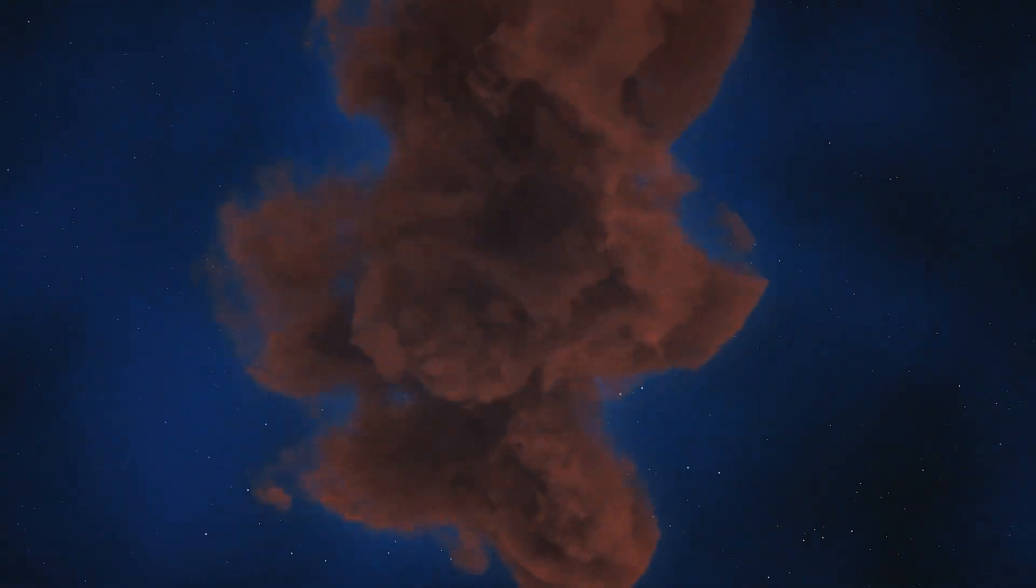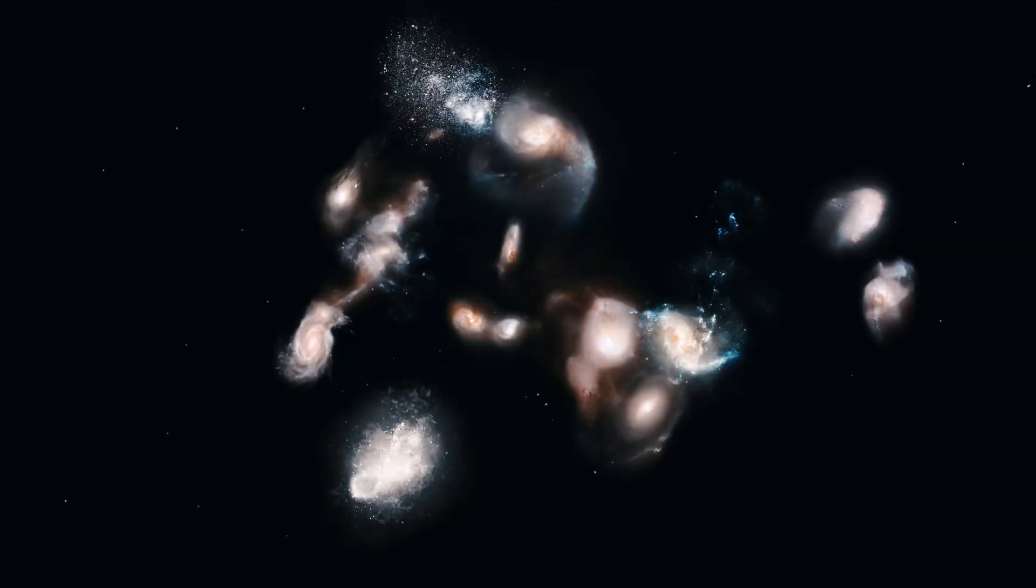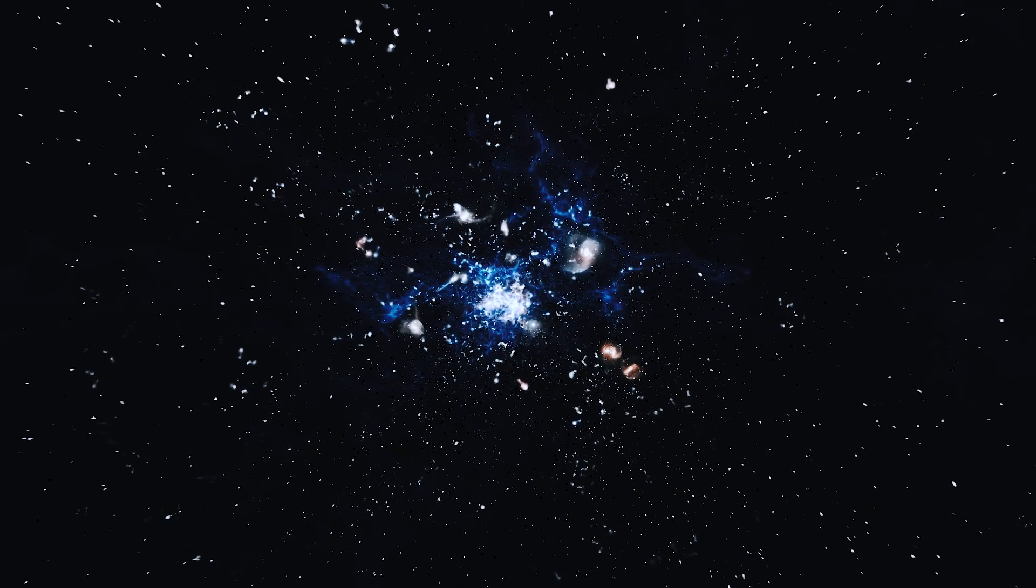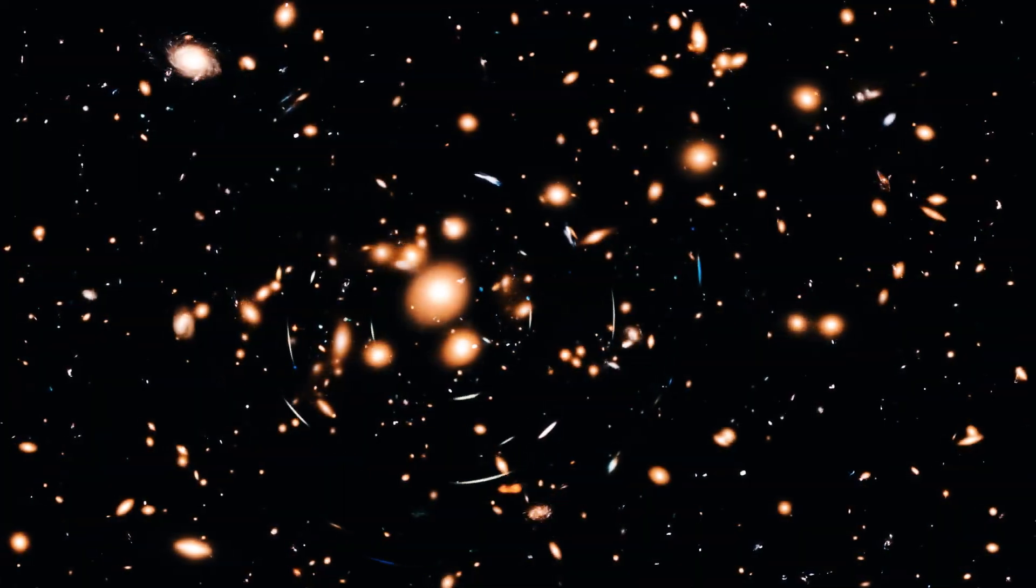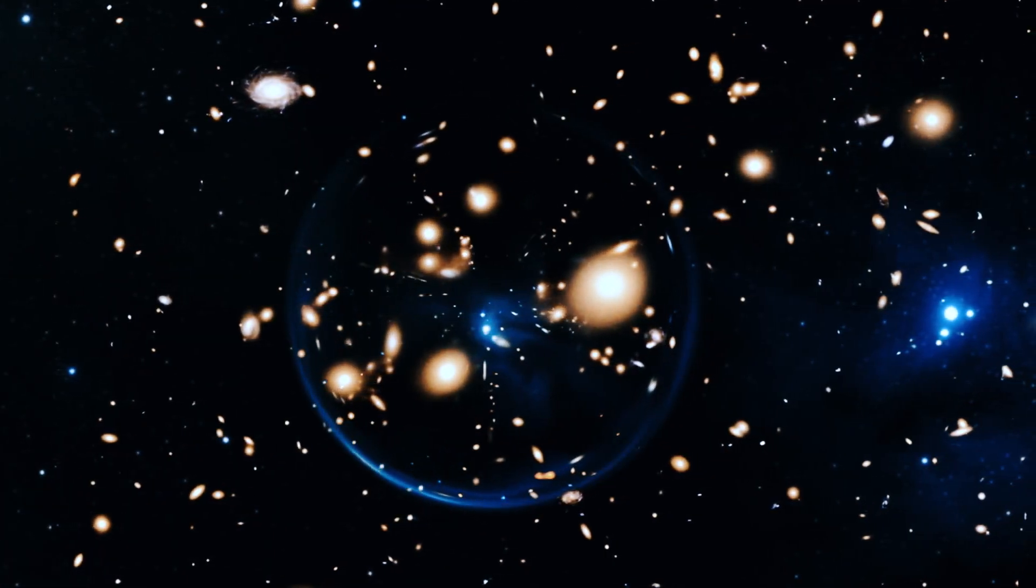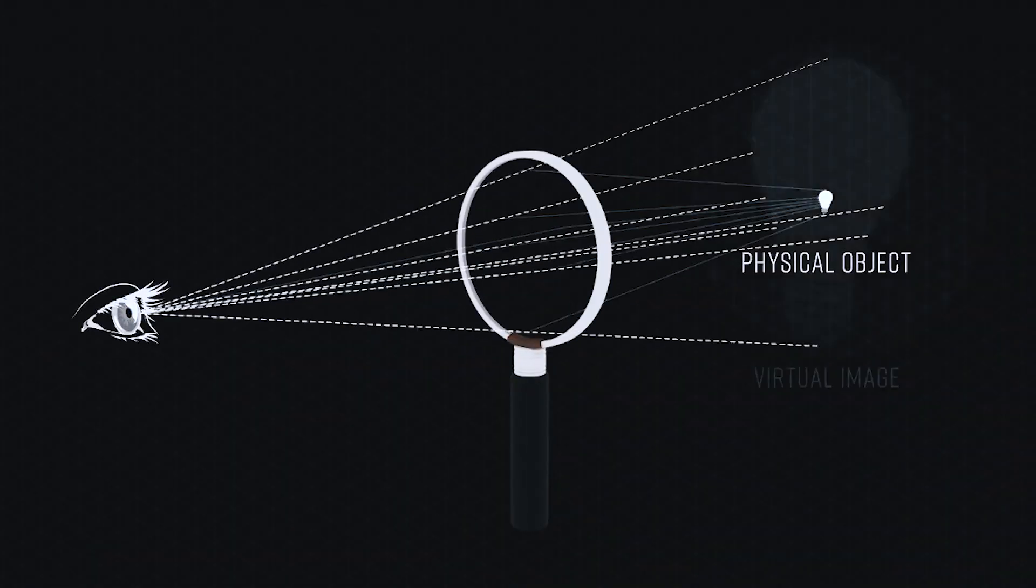Dark matter makes up most of the universe's mass and creates its underlying structure. Dark matter's gravity drives normal matter, gas, and dust to collect and build up into stars and galaxies. Although astronomers cannot see dark matter, they can detect its influence by observing how the gravity of massive galaxy clusters, which contain dark matter, bends and distorts the light of more distant galaxies located behind the cluster. This phenomenon is called gravitational lensing.